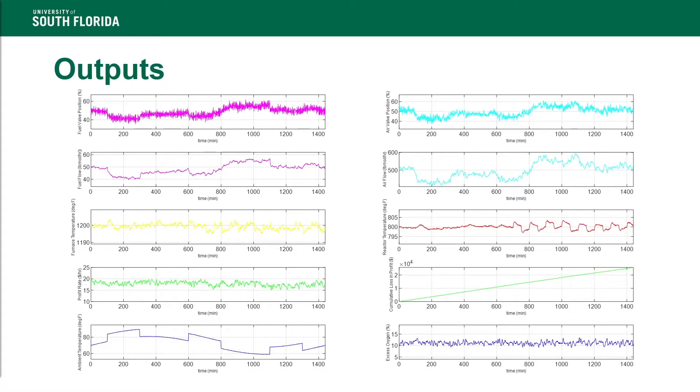The outputs are presented here. The furnace temperature varies from the set point by plus or minus 5 degrees Fahrenheit, and the reactor temperature varies from the set point by plus or minus 3 degrees Fahrenheit. Now, the control scheme will be demonstrated in Simulink.